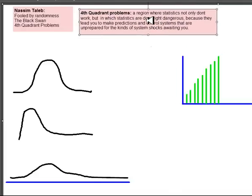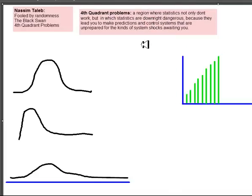The bottom line is that a fourth quadrant problem is a problem in this region where statistics not only don't work for you, but in which the statistics are downright dangerous because it leads you to make predictions and control systems that are unprepared for the kinds of system shocks that are waiting for you.